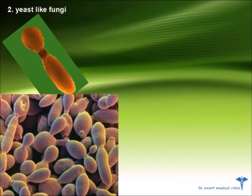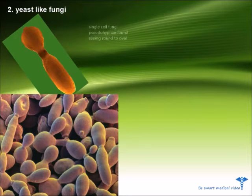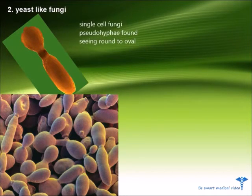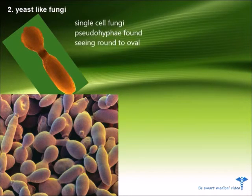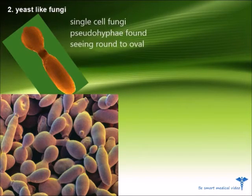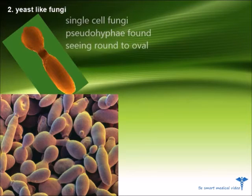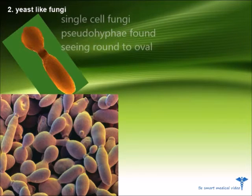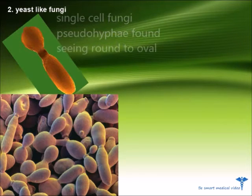Number 2: Yeast-like fungi. Yeast-like fungi are also single cell fungi. In these fungi, pseudohyphae are also found. In microscope they appear round to oval.